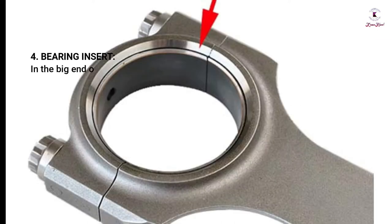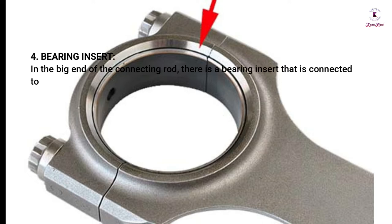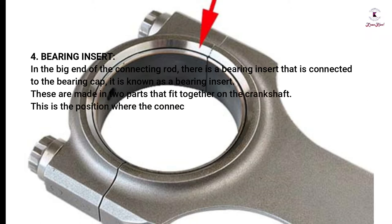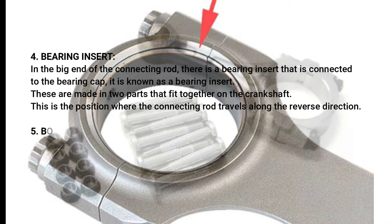Bearing insert: In the big end of the connecting rod, there is a bearing insert that is connected to the bearing cap. These are made in two parts that fit together on the crankshaft. This is the position where the connecting rod travels along the reverse direction.